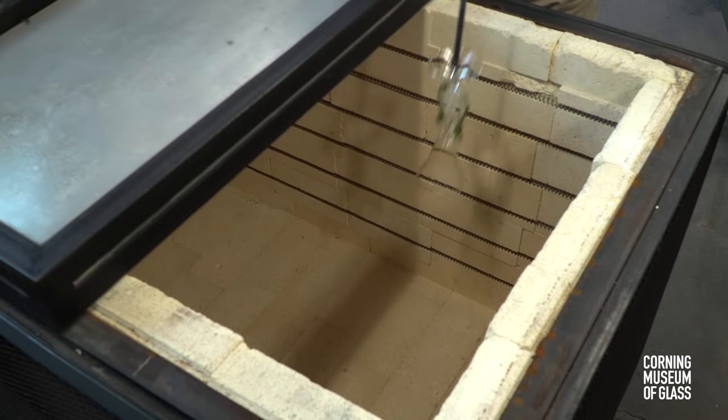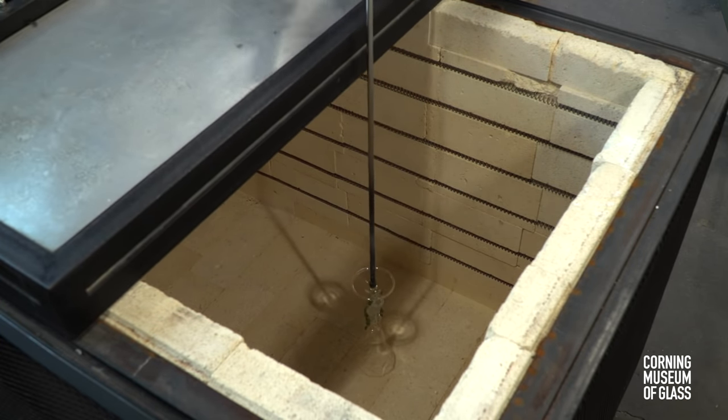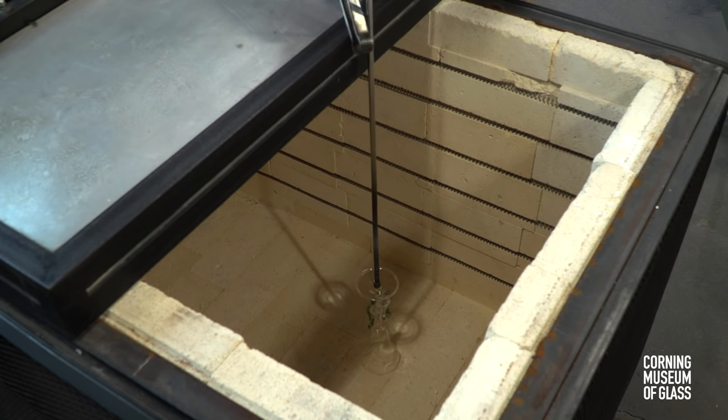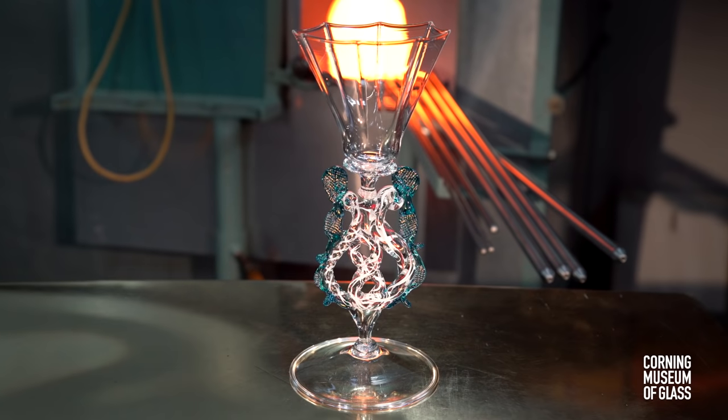The vessel is lowered into the annealer. The rod tapped. The punty breaks, leaving the vessel in the annealing oven for slow cooling.